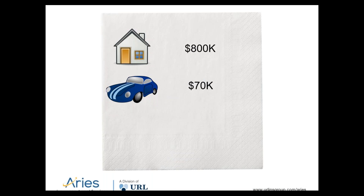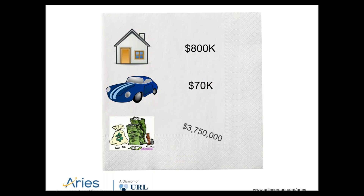Yet you do not have insurance on your most valuable asset. The client might come back with something like, what do you mean by that? And as the advisor, you say: you're 40 years old making $150,000 a year. You're going to make $3,750,000 between now and age 65, and yet you have done nothing to insure that asset.